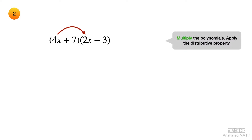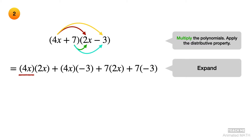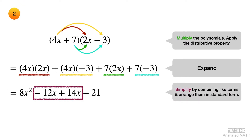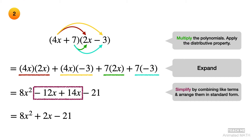Apply the distributive property when you multiply the polynomials. Expand the product — each colored arrow is matched with an underline of the same color. Simplify the polynomial product by combining like terms and arrange in standard form. The final answer is 8x squared plus 2x minus 21.